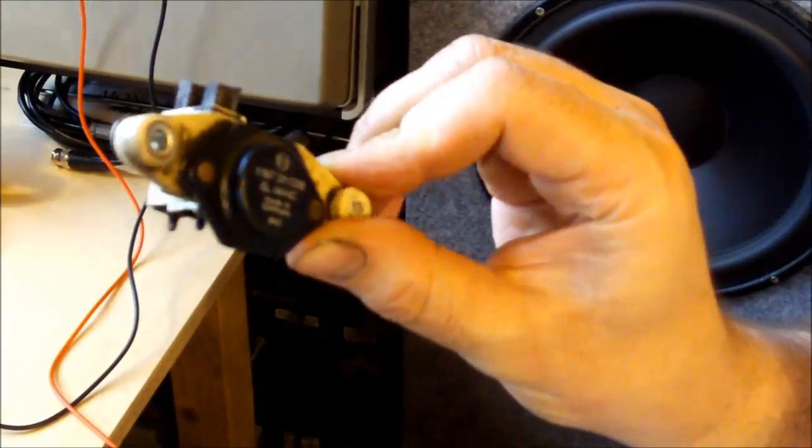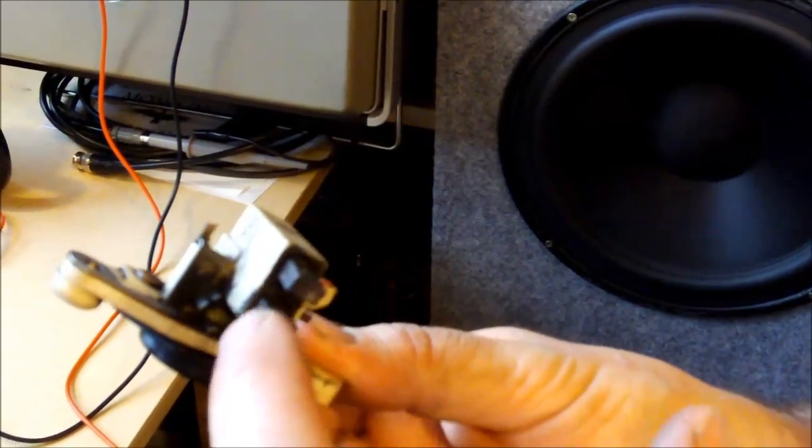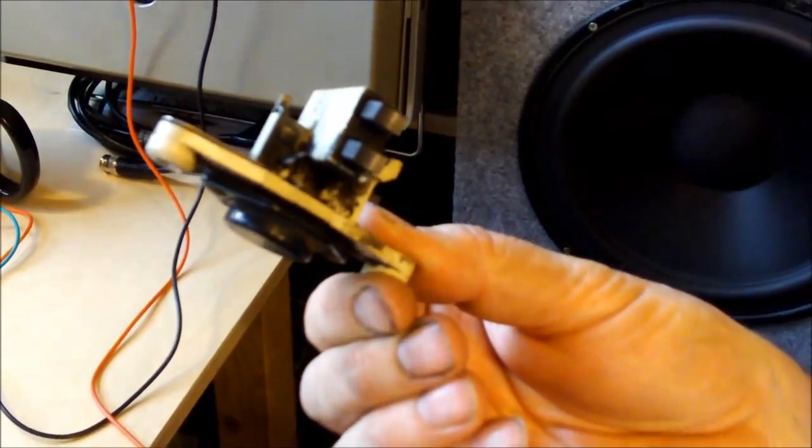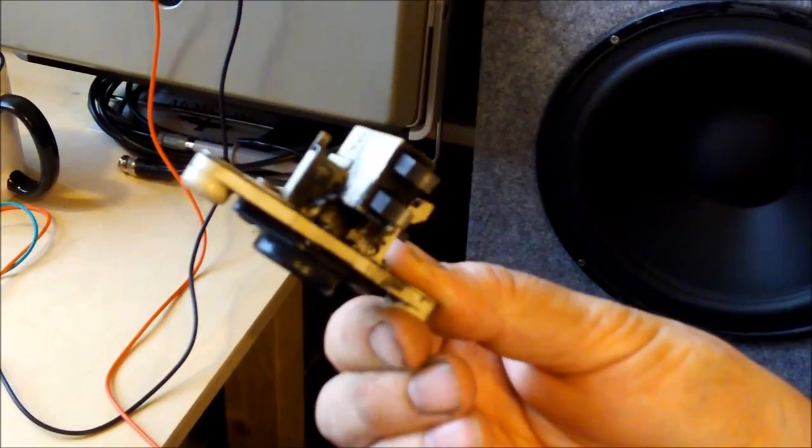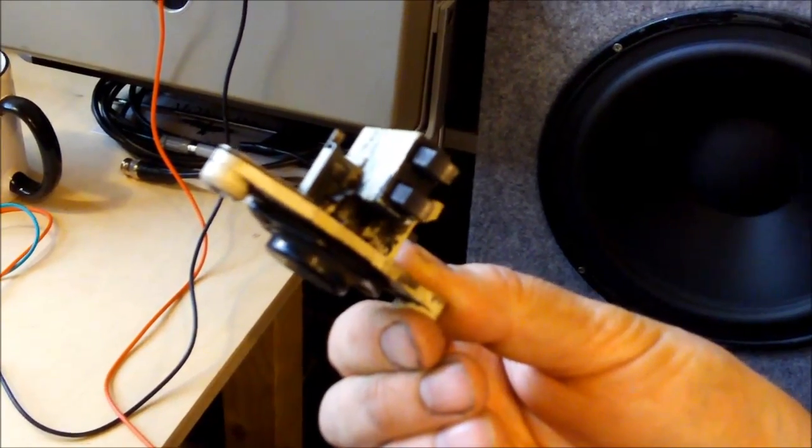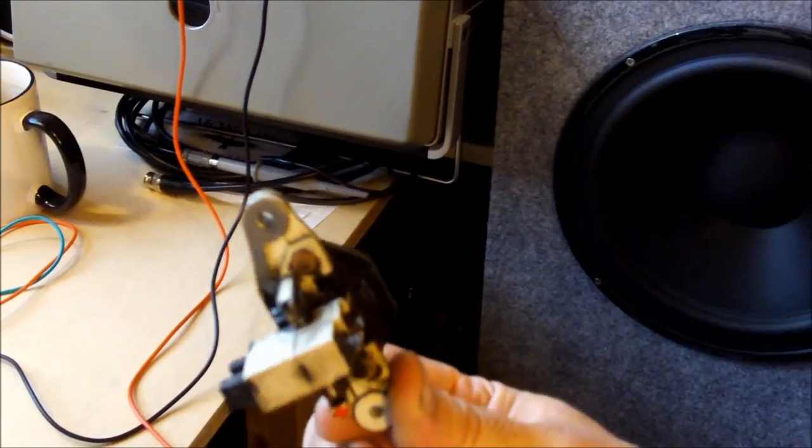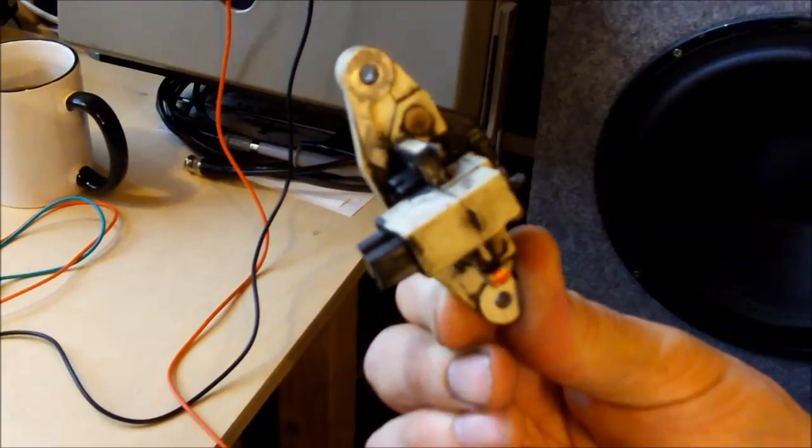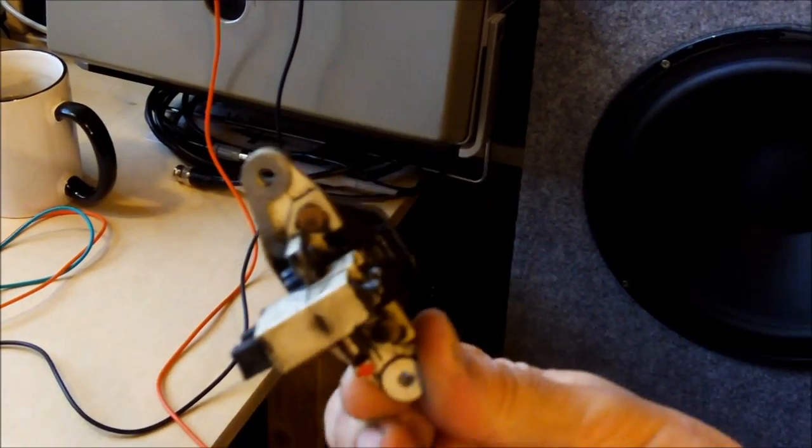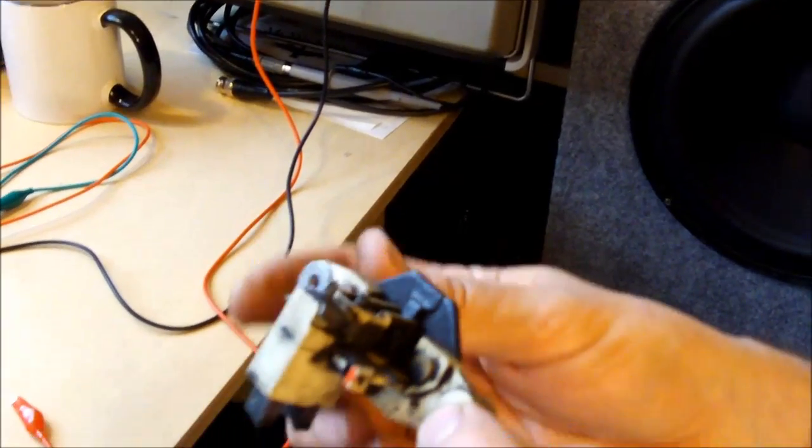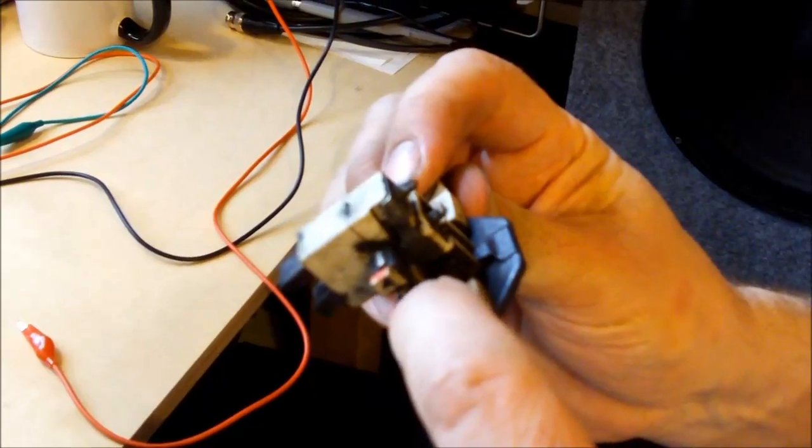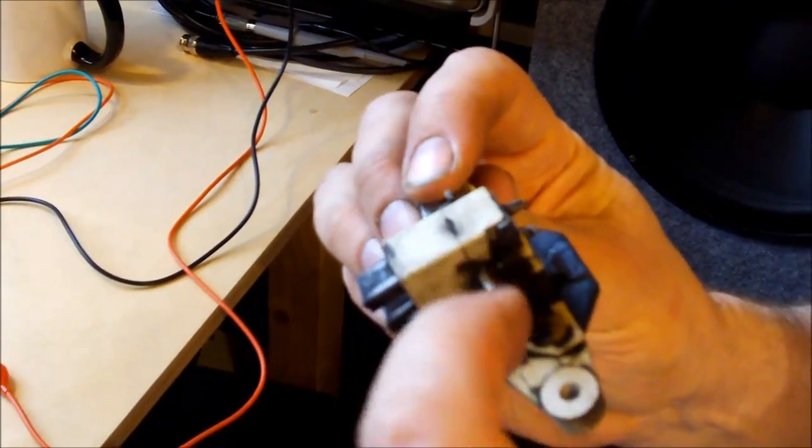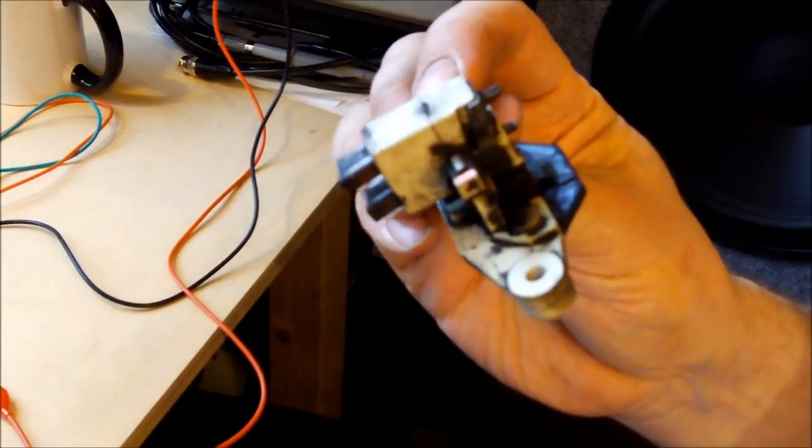You can see the carbon brushes which connect the rotor, the field connectors. Here we have the connector for ground and this one is the connector for plus 12 volt battery.